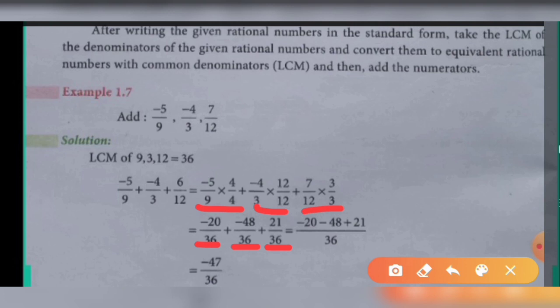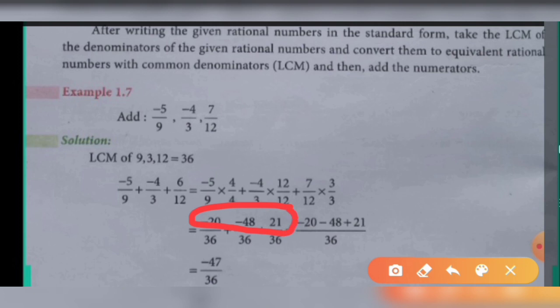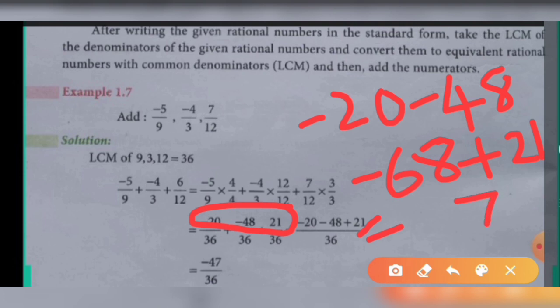Now all denominators are the same, so write 36 only once and add or subtract the numerators: minus 20 minus 48 plus 21. Add the like-sign numbers first: minus 20 minus 48. 0 plus 8 is 8, and 2 plus 4 is 6, with a common sign of minus, giving minus 68. One more number remains: plus 21. The signs are different so subtract: 68 minus 21. 8 minus 1 is 7, and 6 minus 2 is 4, giving 47. Since 68 is greater and has a minus sign, the final answer is minus 47 by 36.